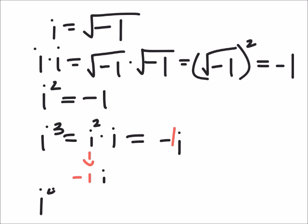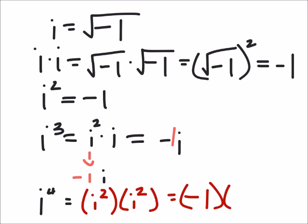So let's look at i to the power of four. That would be the same as i² times i². Well, we already know what i² is. i² is negative one. So we really have negative one times negative one, which is one.